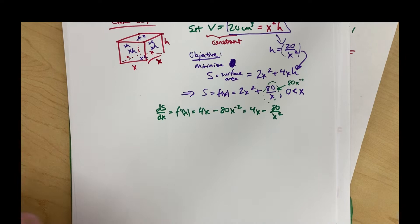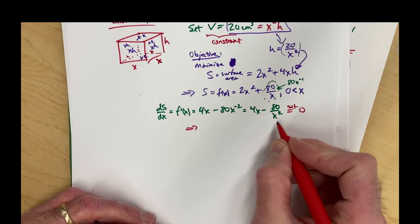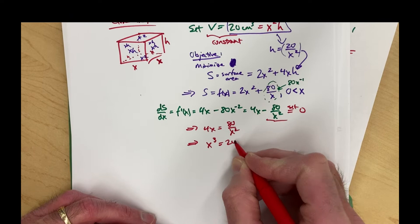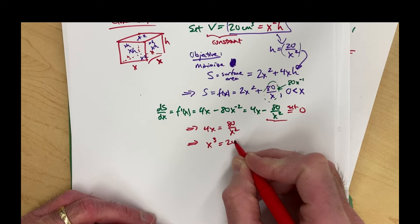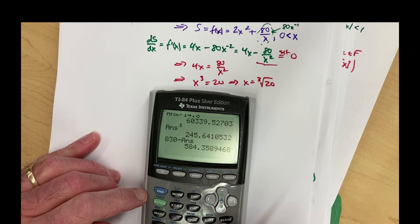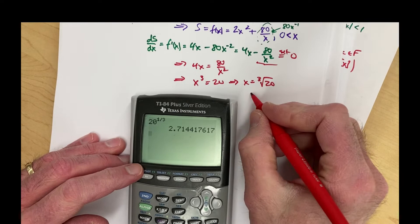Set this equal to zero and solve for x. Put the second term on the other side: 4x equals 80 over x squared. Multiply both sides by x squared and divide both sides by 4, and you get x cubed equals 20. So x equals the cube root of 20 — that's your critical point, which is 20 to the one-third power, approximately 2.7144 centimeters.